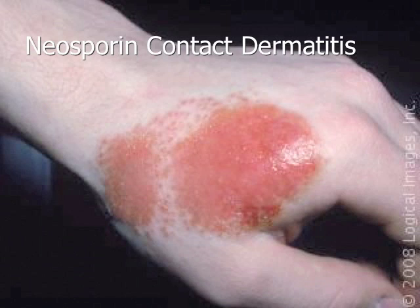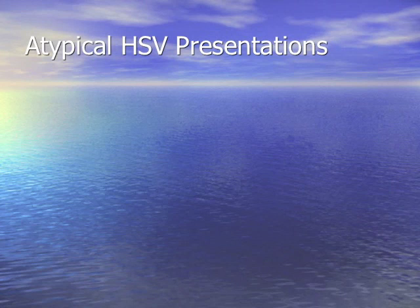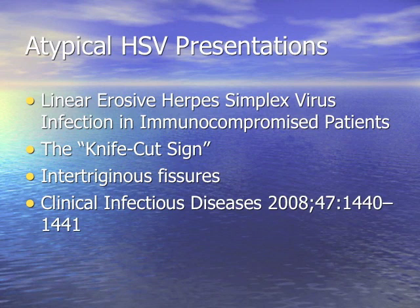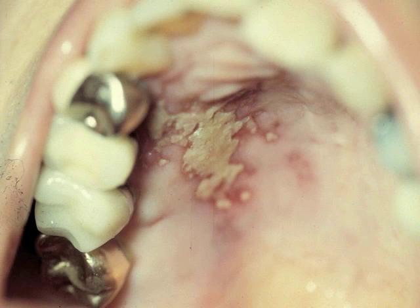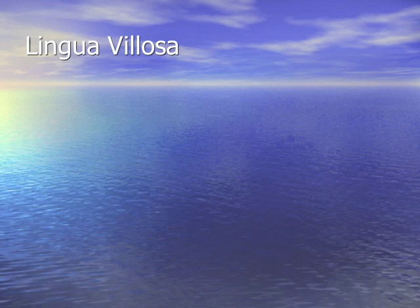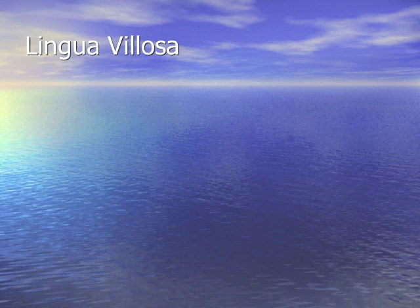When applying ointments to cuts, note that neomycin in polysporin/neosporin can cause contact dermatitis in 1 in 1,000 people, mimicking cellulitis. Use bacitracin instead. The knife-cut sign in intertriginous folds is an atypical presentation of herpes, occurring in both immunosuppressed and immunocompetent patients. Herpes can also cause ulcers on the palate. Thrush can also occur, and lingua villosa (black, brown, or white hairy tongue) mimics thrush — caused by cancer, tobacco, coffee, antibiotics, or HIV.